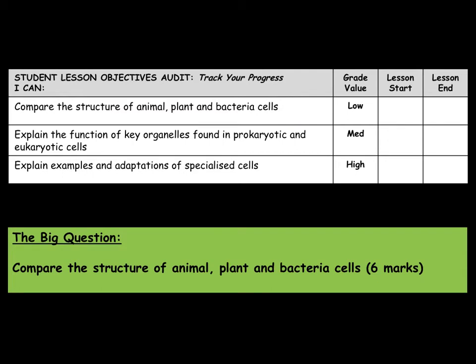We will look at the functions of the key organelles that we find in both prokaryotic and eukaryotic cells, and finally we will look at some examples and adaptations of specialised cells. Our big question today is to compare the structure of animal, plant and bacteria cells.